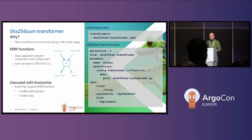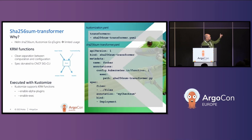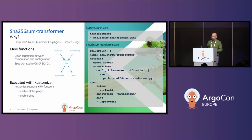KRM functions are defined in a spec donated to the CNCF kpt CLI. Kustomize is already using that. Basically, you have input items — which are KRM objects — and output items — which are also KRM objects. Then you have your function and a set of configuration for it. We got lucky because Kustomize already has alpha support to run these KRM functions, and since KRM functions need an orchestrator, we started using it that way.